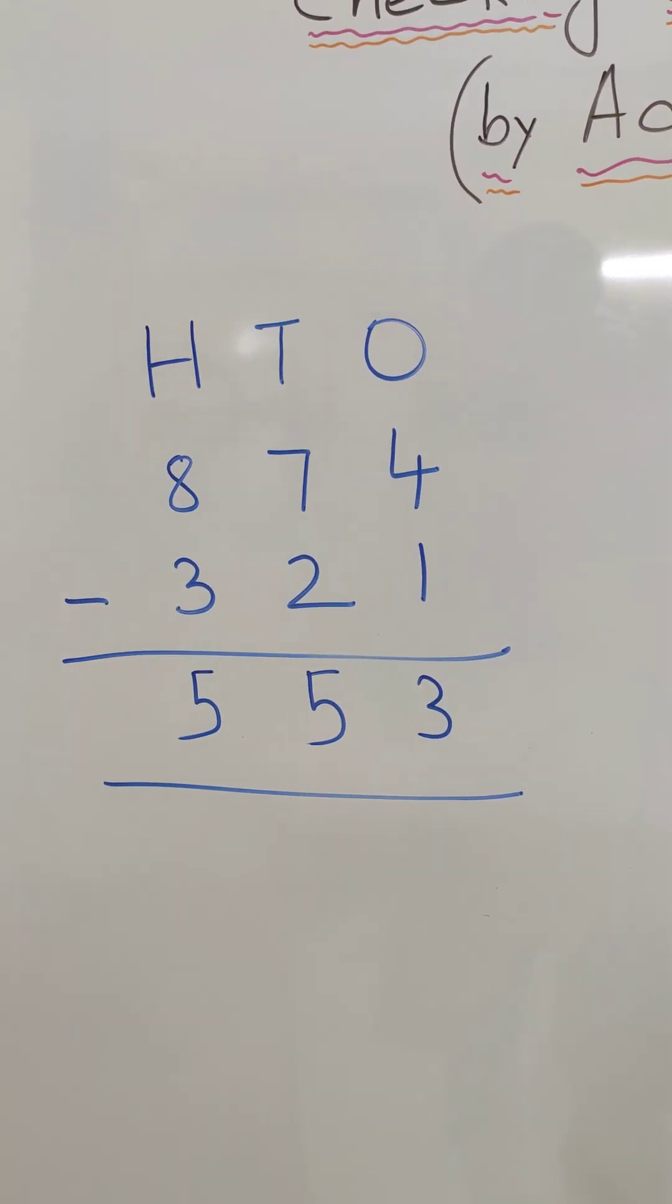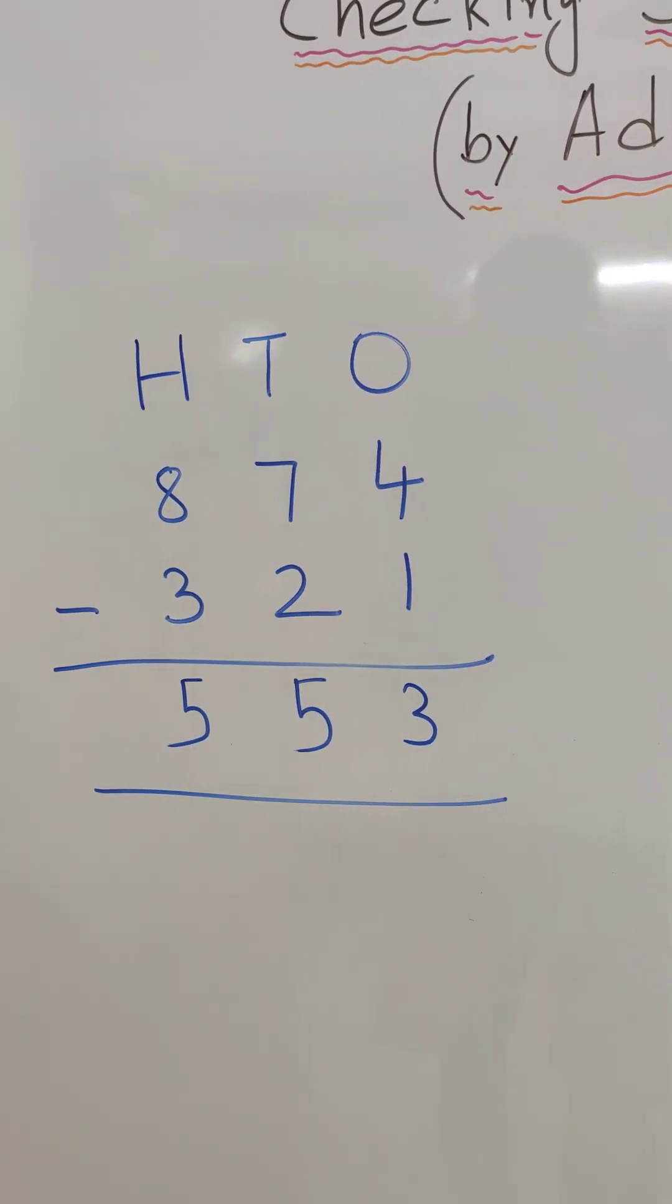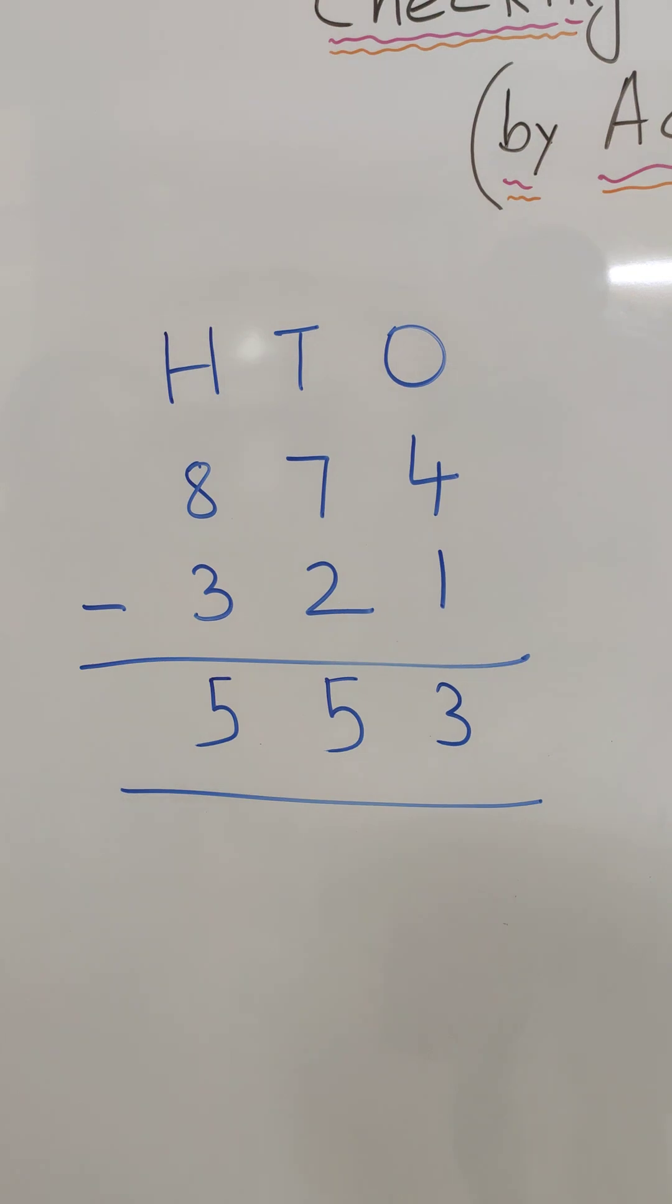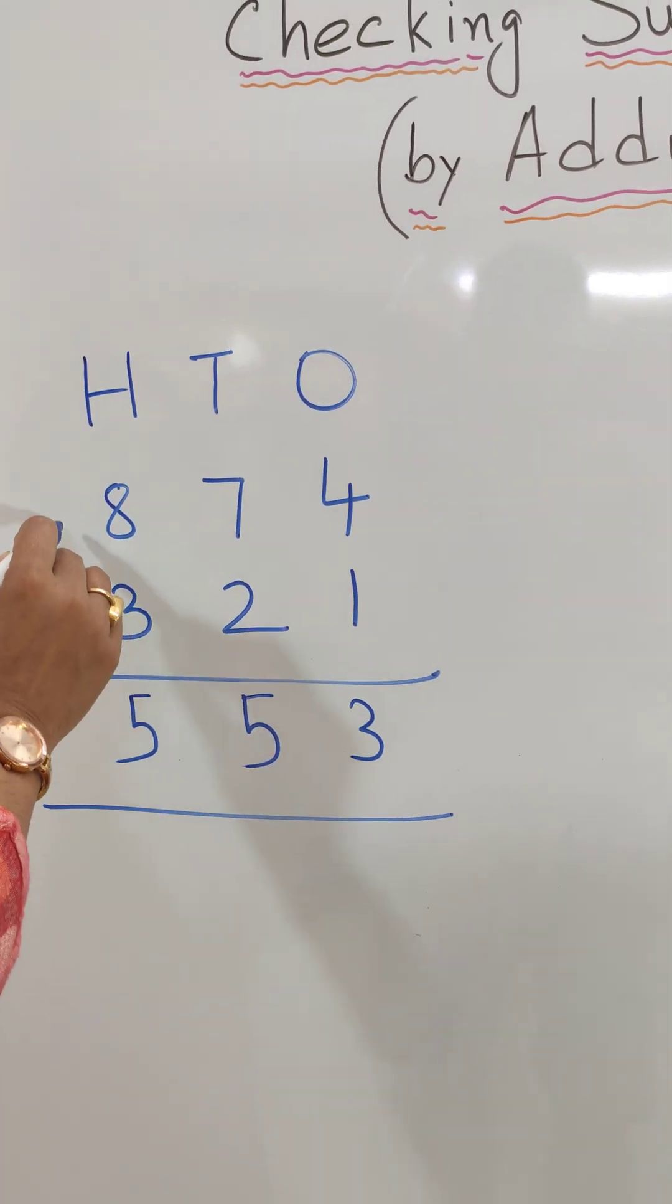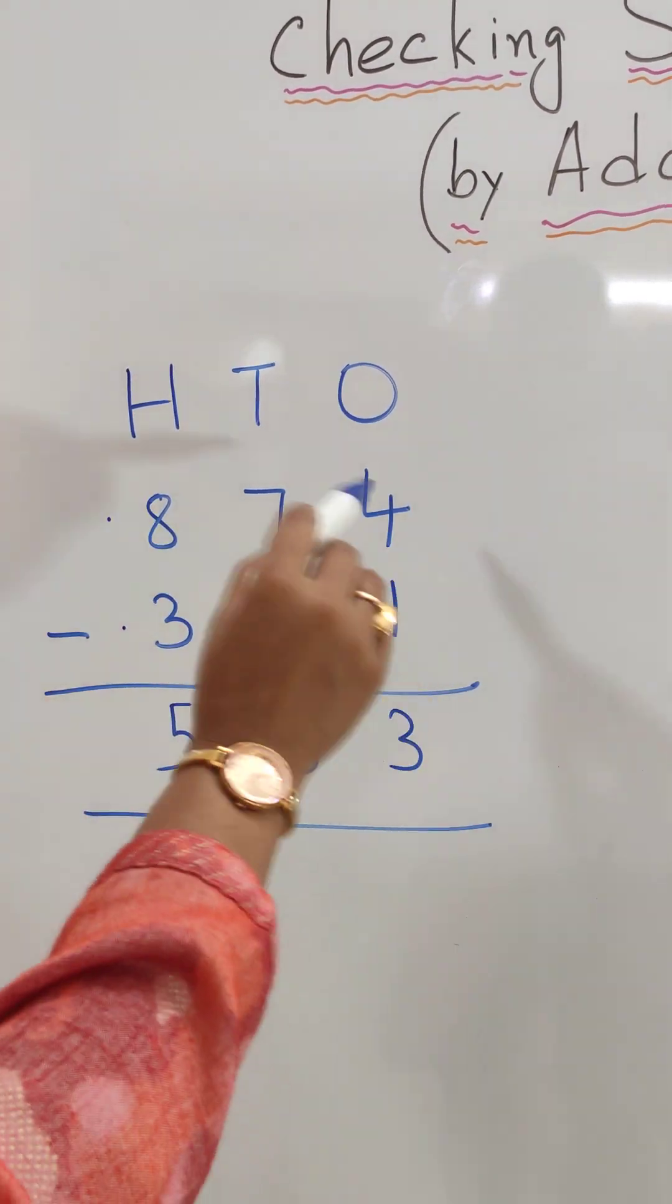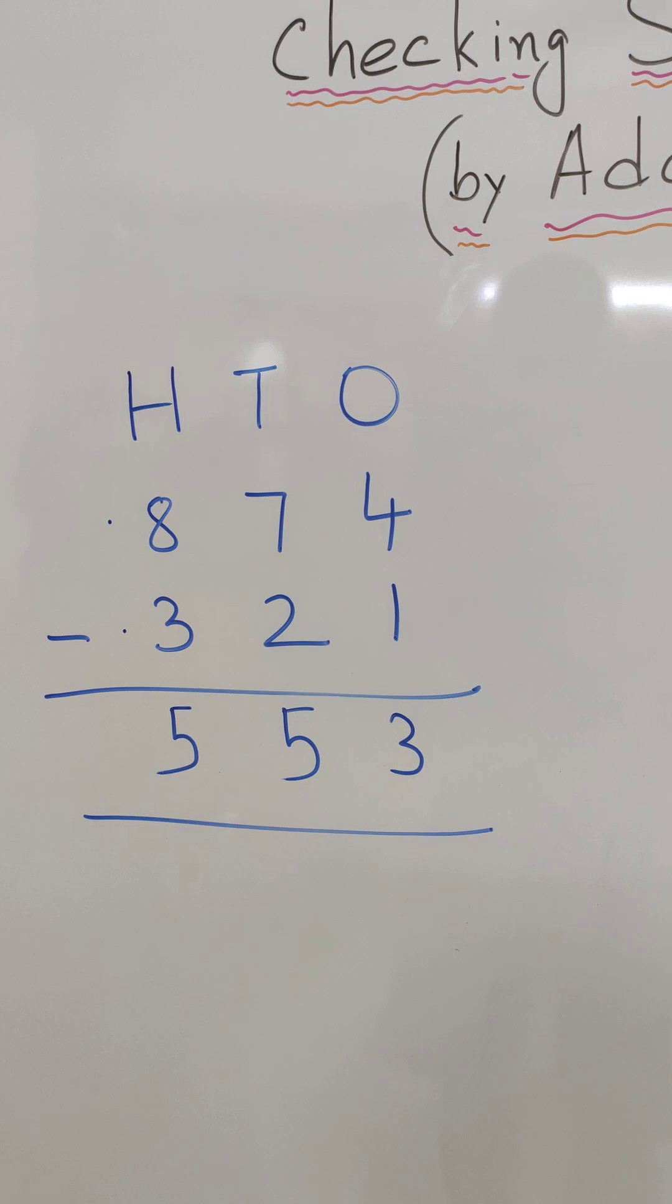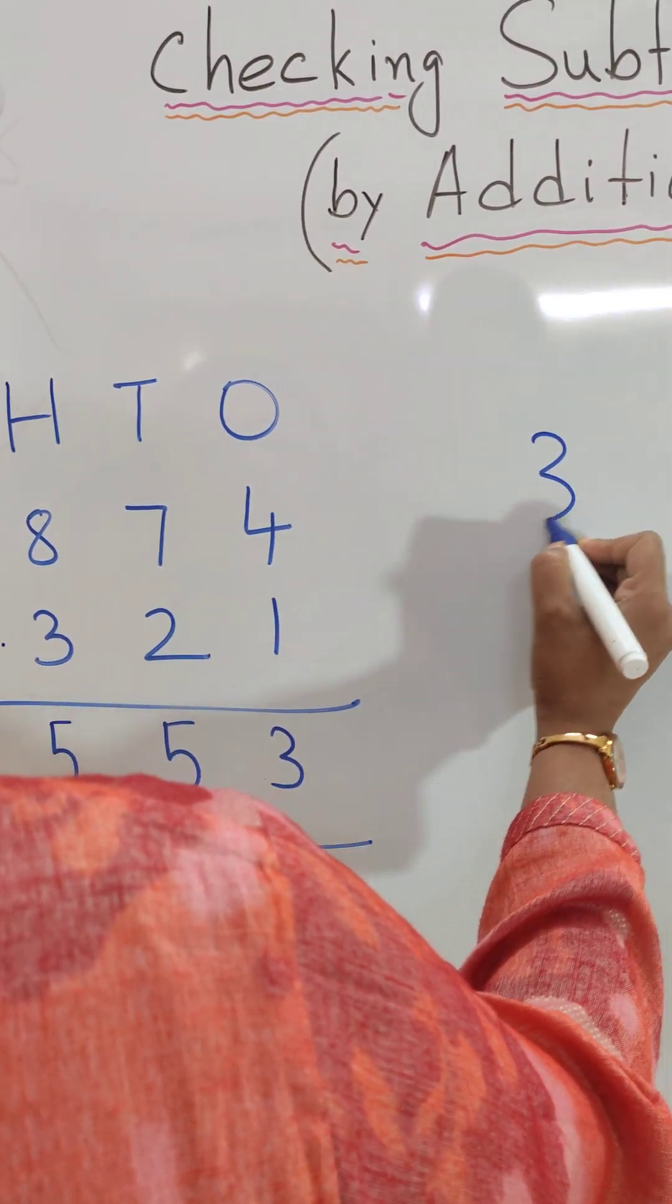So now we will check the subtraction by doing addition. How we will check our subtraction by doing addition? Let me show you. Among these two numbers, we see which one is the smaller number. 321 is the smaller number. So first let's write 321.